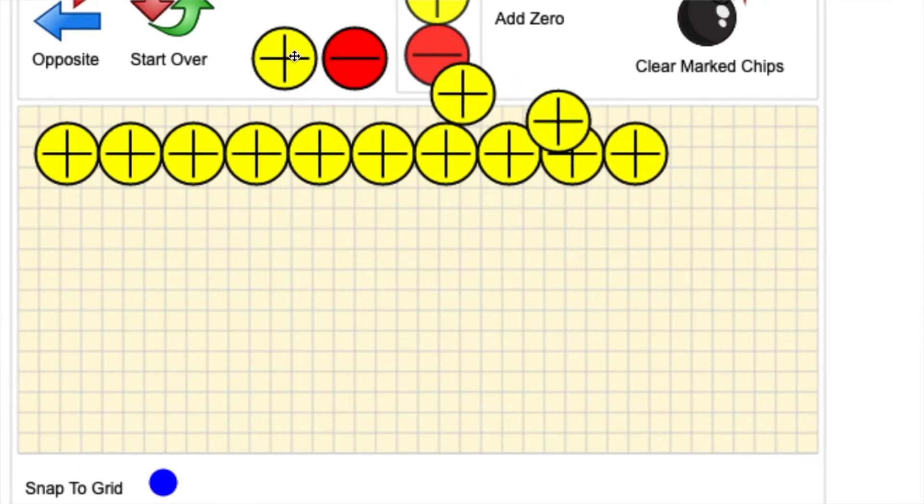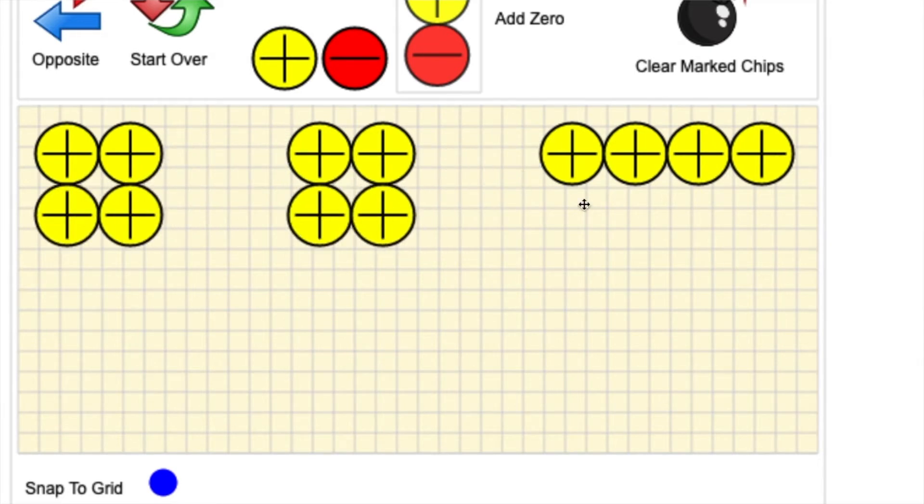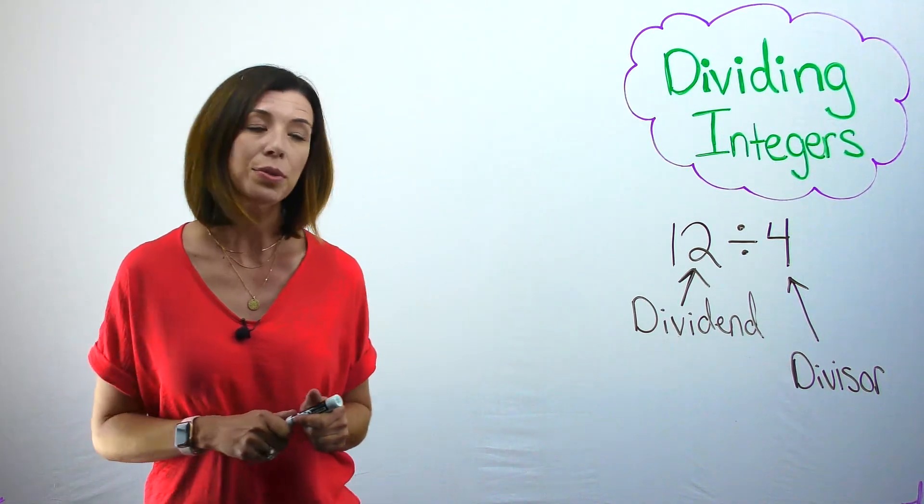You can see that I've put on the board 12 positive chips. And again, I need to put them into groups of 4. So I'm going to make a group of 4 here, a group of 4 here, a group of 4 here. And you can see that I end up with 3 groups. So 12 divided by 4 is the same as 3.